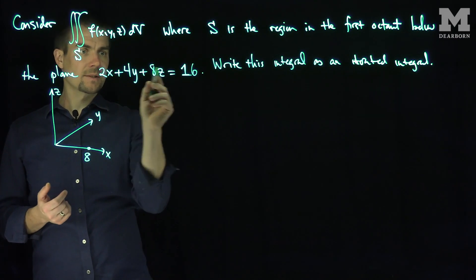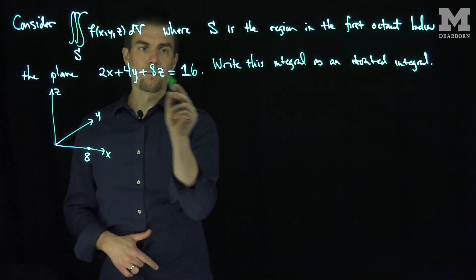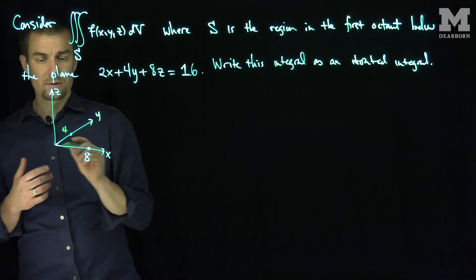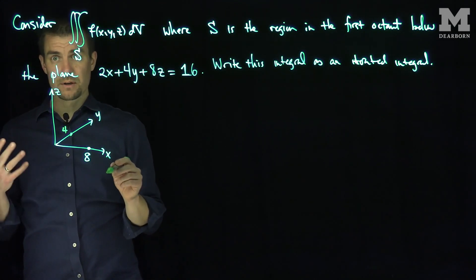The point when I let x and z be equal to 0, that says that 4y is equal to 16 or y is equal to 4. So y is equal to 4 is right over here. So the point 0, 4, 0 is also on the plane.